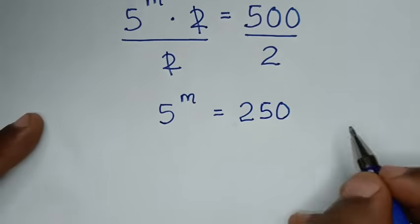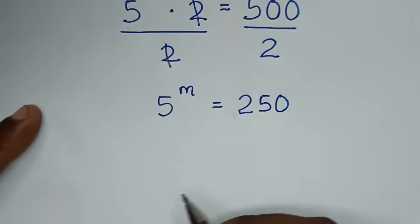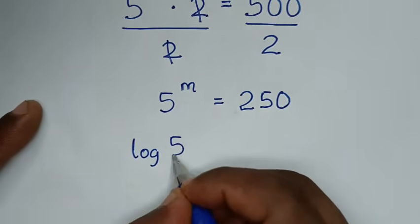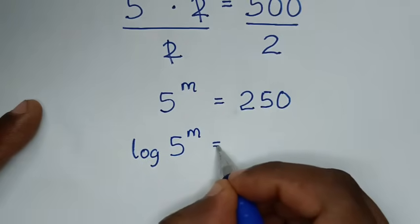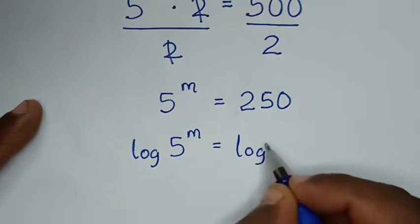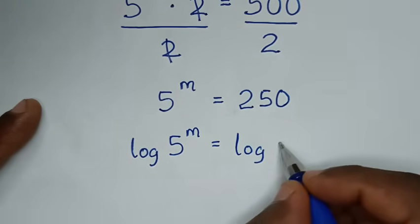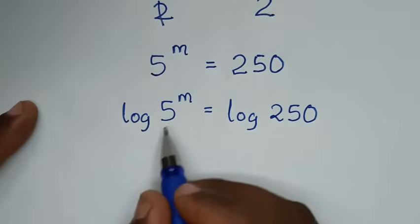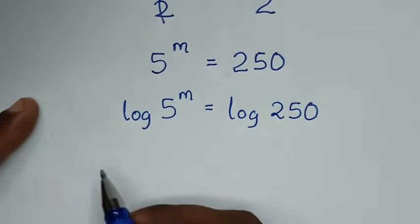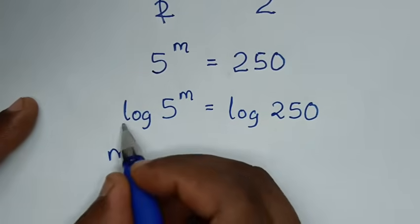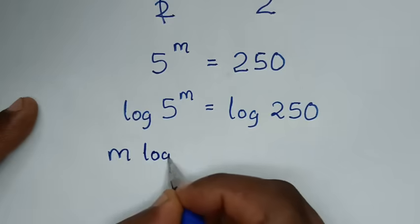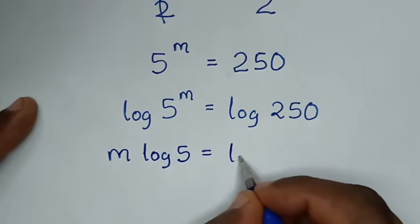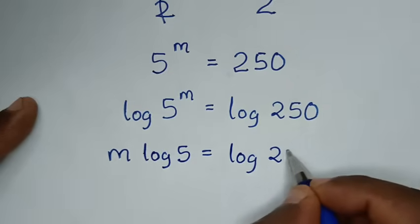Then in the next step, we will apply log on both sides. So it will be log of 5 power of m is equal to log of 250. Then this power of m will move to the front, so it will be m times log of 5 is equal to log of 250.